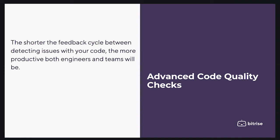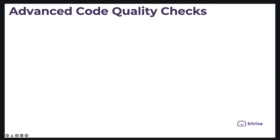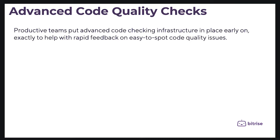The shorter the feedback cycle between detecting issues with your code, the more productive both engineers and the team will be. While getting feedback on your code at code review is great, would it not be even better to get instant feedback even before you submit your code to code review? Productive teams put advanced code checking infrastructure in place early on, exactly to help with rapid feedback on easy-to-spot code quality issues.